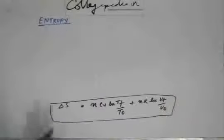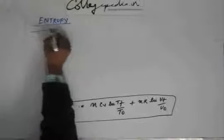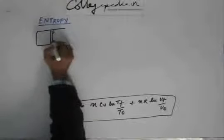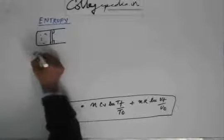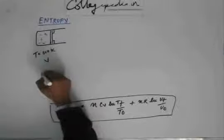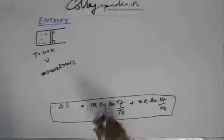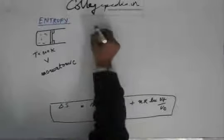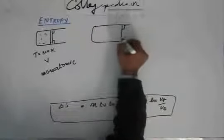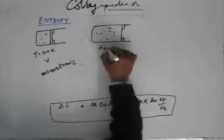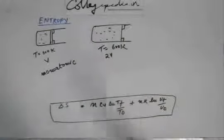Let's quickly solve a small problem using this formula for entropy change of an ideal gas. Suppose we have a chamber containing a monoatomic gas at temperature 300 K and volume V. We change the state of the system such that the volume is doubled to 2V and the temperature is also doubled to 600 K. We are asked to find the entropy change during this process.